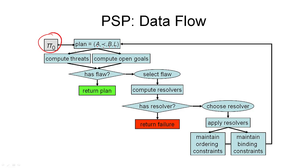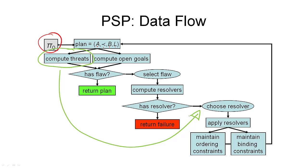The UC Pop Planner is different in that it does not deal with the computation and handling of threats at this stage in the algorithm. Threads are moved to a different part — namely, after the open goals are dealt with, the algorithm will deal with all the threads caused by the resolver for the open goal flaw. This may cause a little loop where all the threads are dealt with.